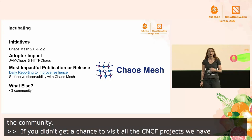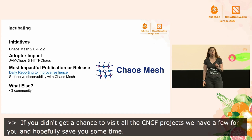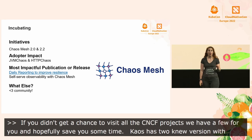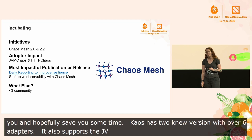Chaos Mesh is an open source cloud native chaos engineering platform. Chaos Mesh now has two new versions, 2.0 and 2.2, with over 60 adopters. Chaos Mesh also supports JVM Chaos and HTTP Chaos, and after their release have been integrated by multiple adopters already.